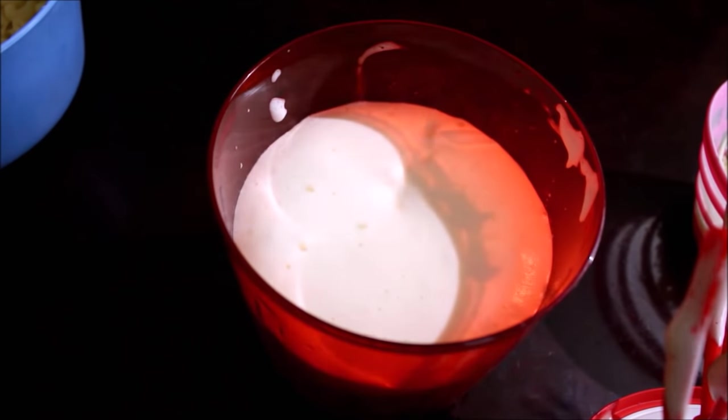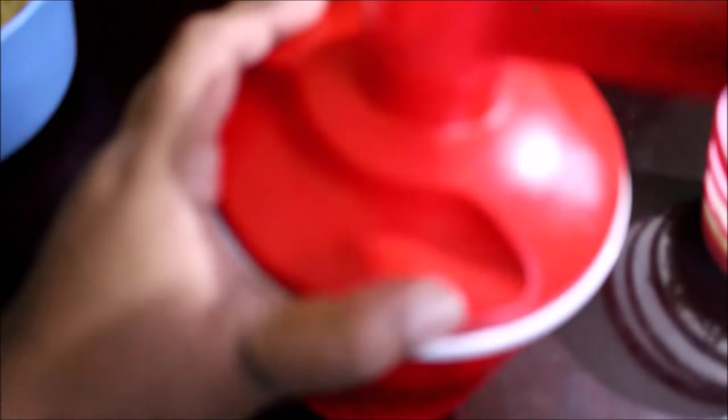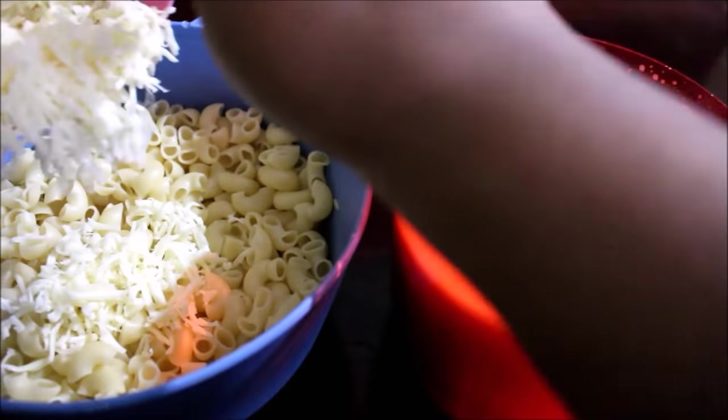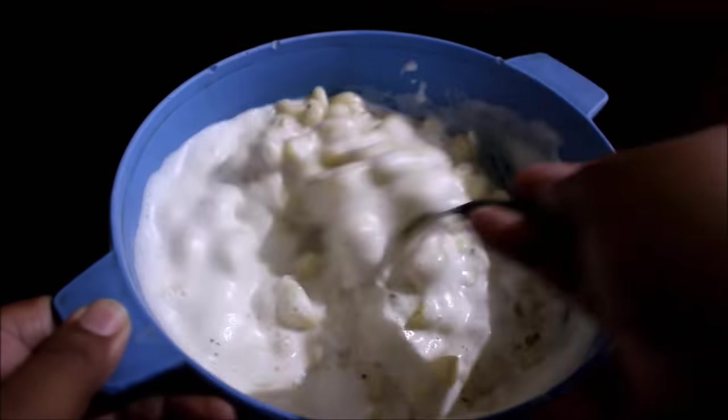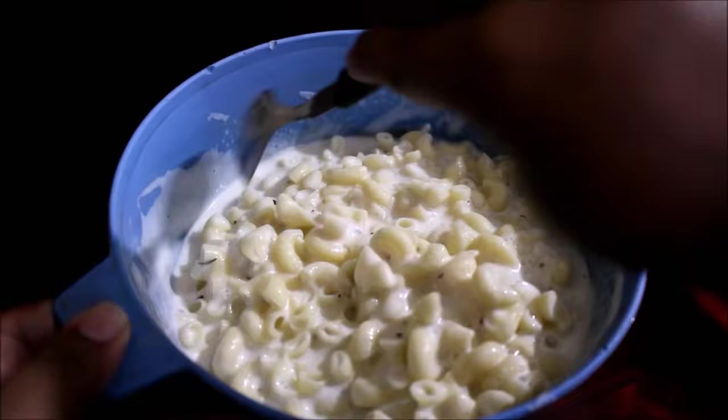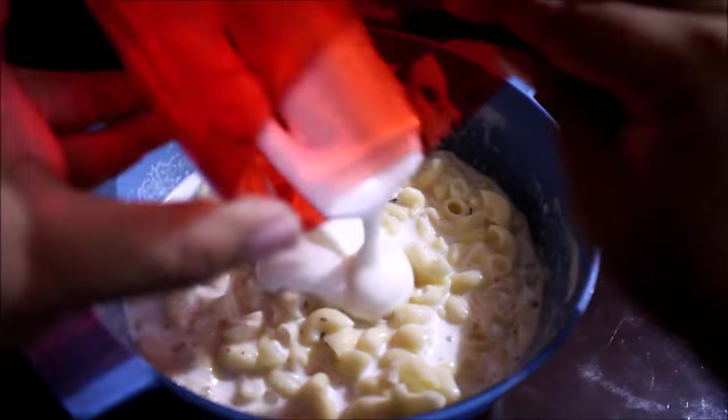Now I've added the milk and seasoning, I'm just giving it a good whisk. To the macaroni I've added cheese and the prepared egg mixture. I'm going to give this a good mix and add it to the dish or a mug. You can serve this in a mug, so I'm going to add it to a mug and microwave this for two minutes.